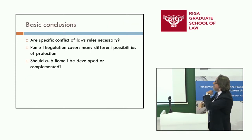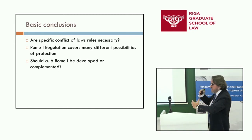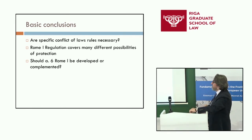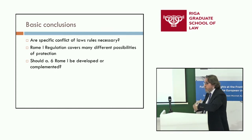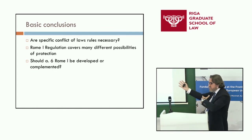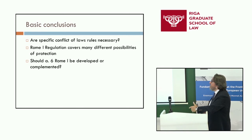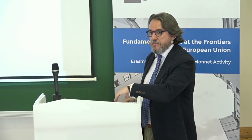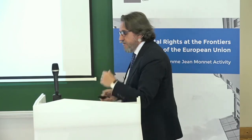Basic conclusions: first, are specific conflict of law rules in directives necessary? Rome 1 covers many different possibilities of protection, and reading all the relevant articles, you could cover most situations through Rome 1 alone. Second, should Article 6 of Rome 1 be developed, complemented, or implemented further? That is also a question for discussion. Thank you very much — I'll take questions with a drink.